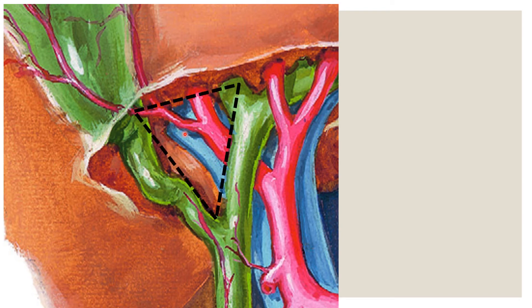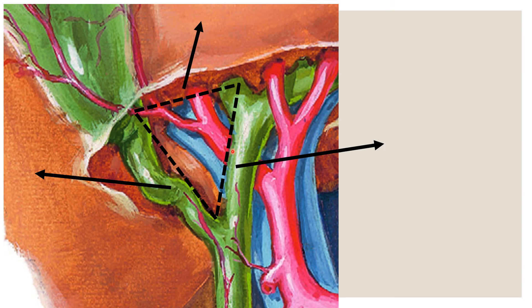Here you can identify Calot's Triangle. The common hepatic duct forms the medial boundary. Below and laterally it is formed by the cystic duct. Above and laterally we can identify the undersurface of the liver. These are the three boundaries of Calot's Triangle. The cystic artery is the content of this Calot's Triangle.